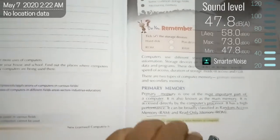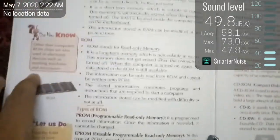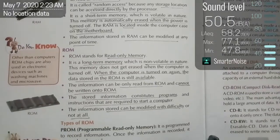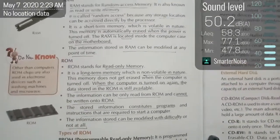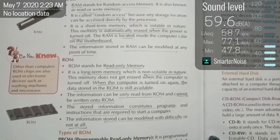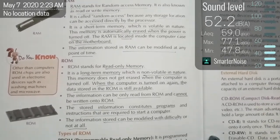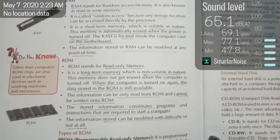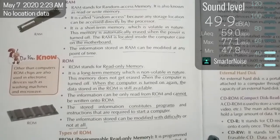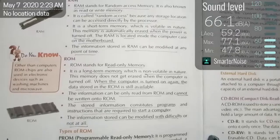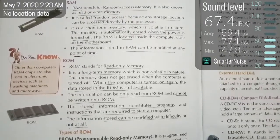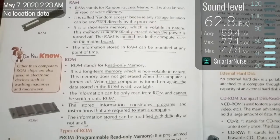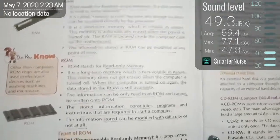Let us review what we learned about RAM. RAM stands for Random Access Memory. It is a device we can read and write. It is also known as volatile memory because it has short-term memory. RAM is located inside the computer case on the motherboard. The information in RAM can be modified at any point of time, whereas in ROM we cannot modify it.